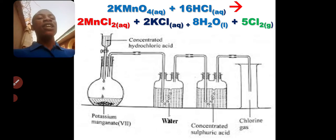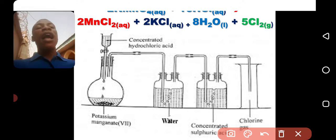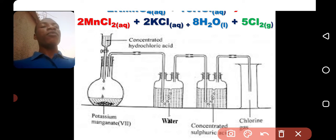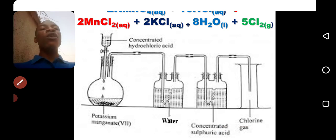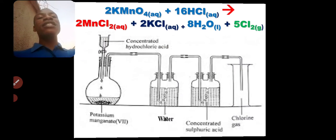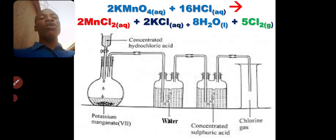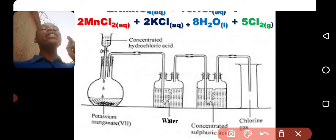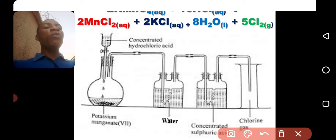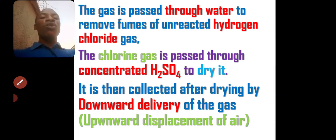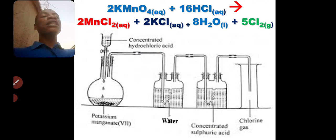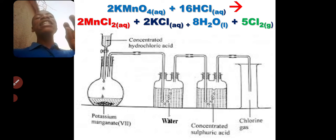The first method is by addition of KMnO4 to concentrated hydrochloric acid. The equation is: 2KMnO4 + 16HCl → 2MnCl2 + KCl + H2O + Cl2 gas. You need to master this reaction very well — KMnO4 reacting with concentrated HCl gives MnCl2, KCl, water, and chlorine gas. Master the reaction and also master the balancing of the equation.